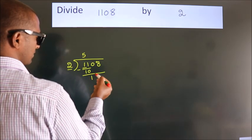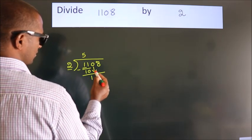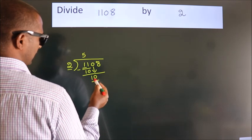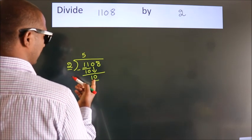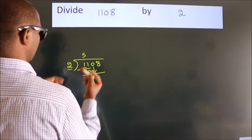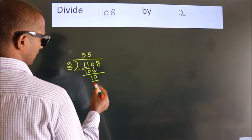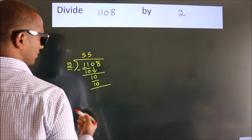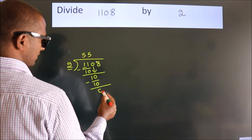After this, bring down the beside number. 0 down, so 10. When do we get 10? In the 2 table, 2 fives, 10. Now we subtract. We get 0.